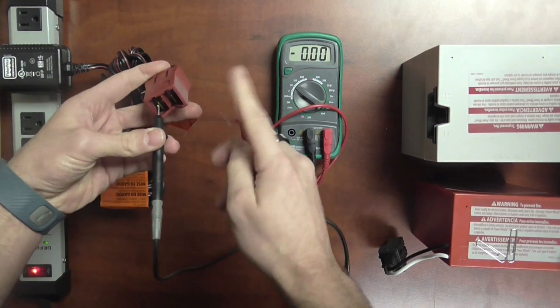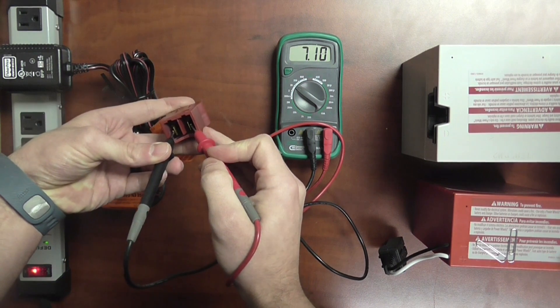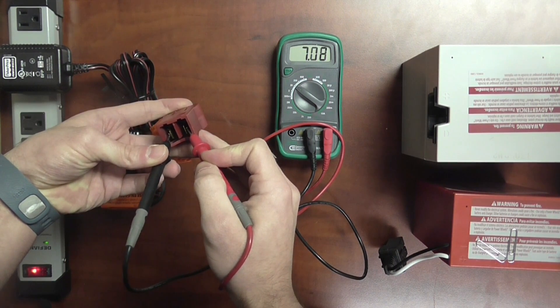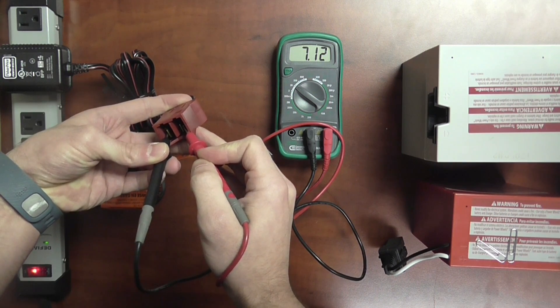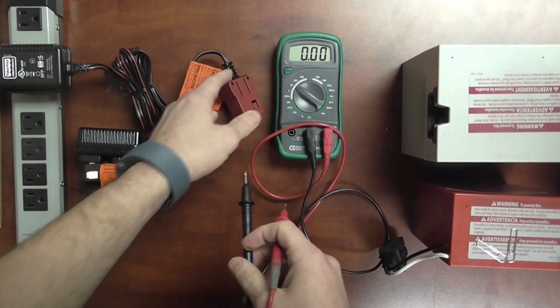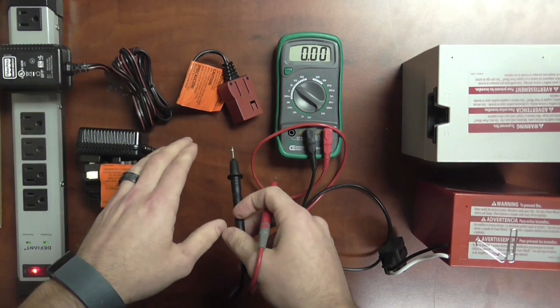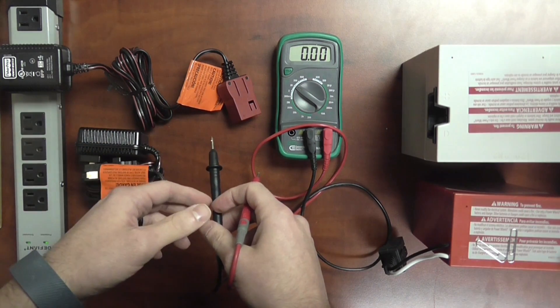So go ahead and touch the negative to the negative and the positive to the positive. And the reading we're getting here is about 7.12 volts. For a 6 volt charger that's good. So even though it's a 6 volt charger it's not going to put out 6 volts. It's always going to put out a higher voltage so that it can actually put amps into the battery itself.